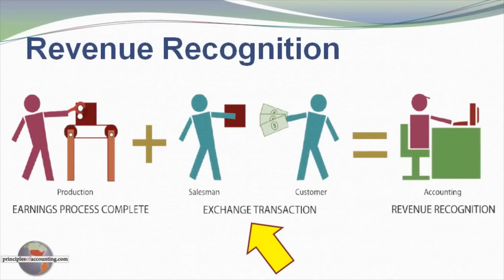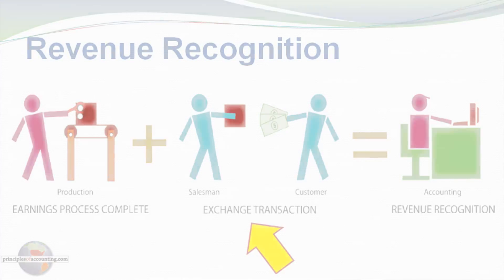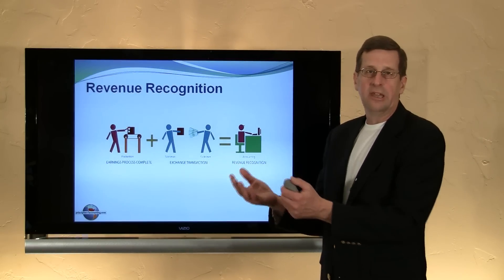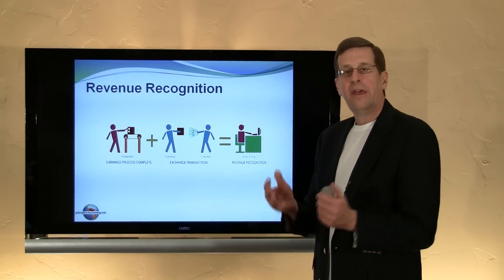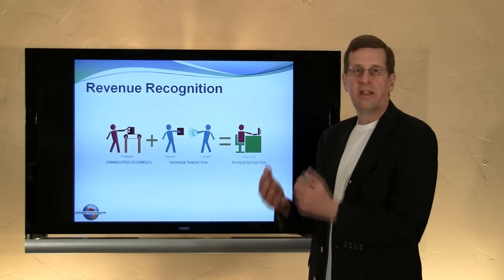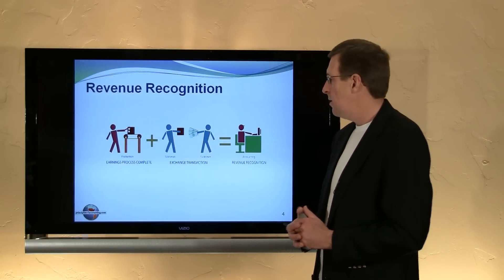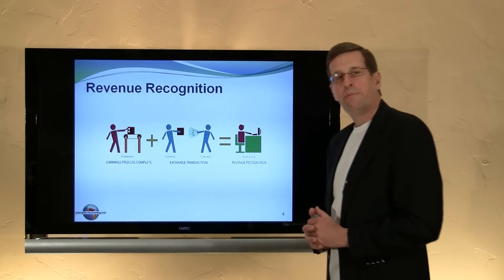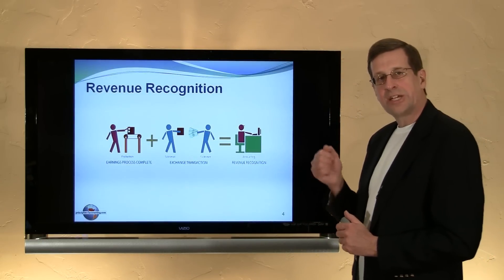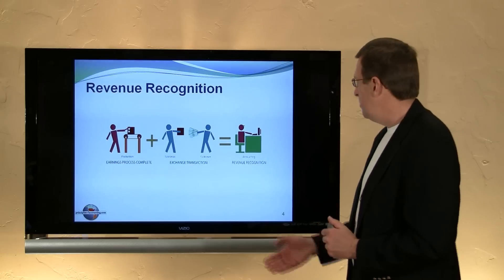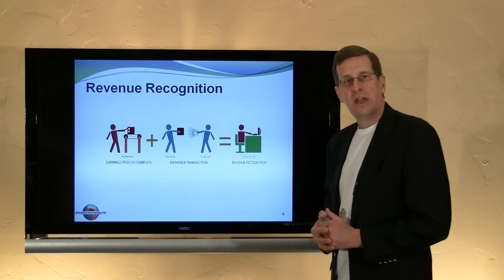The buyer has paid or is agreeing to make payment in the future for the goods, and is genuinely taking ownership of the goods. It's not enough to physically exchange the goods and say, 'Here customer, take a look at these and see if you want to buy them.' They are agreeing — they have bought the goods and are agreeing to make payment in the future if they have not already done so. Both of those must be present — an exchange transaction and earnings process complete — before the accountant would recognize revenues in the accounting records.